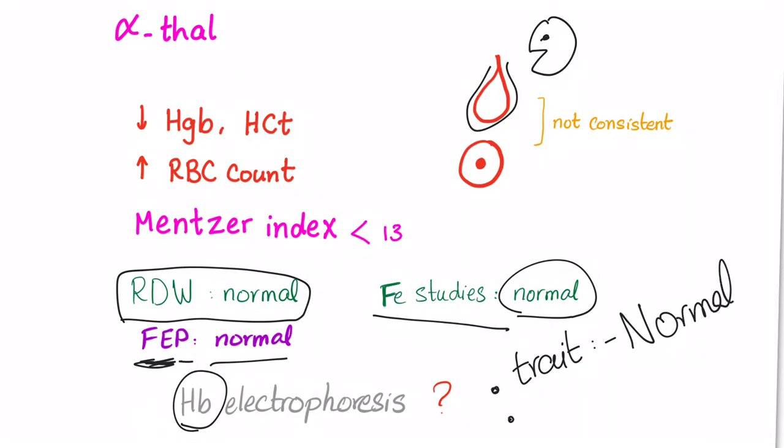If we are talking about alpha thalassemia trait, the hemoglobin electrophoresis will be completely normal. However, if we are talking about three gene deletions, hemoglobin H, you'll find hemoglobin H on electrophoresis. For four gene deletions, hemoglobin Bart disease, you'll find hemoglobin Barts.